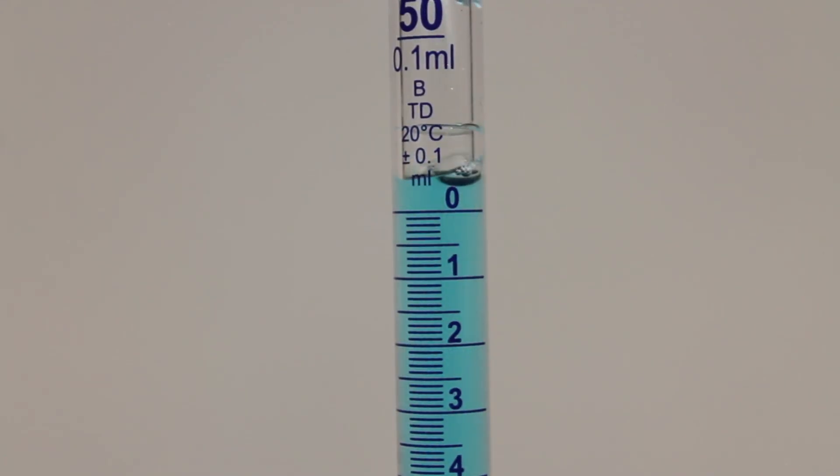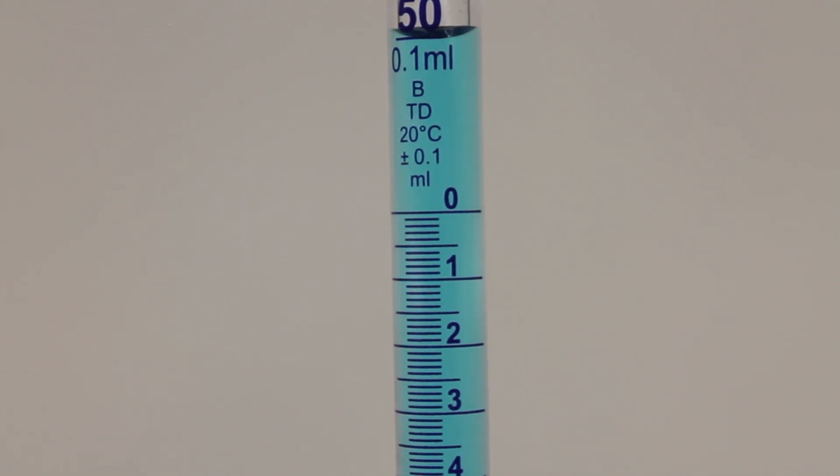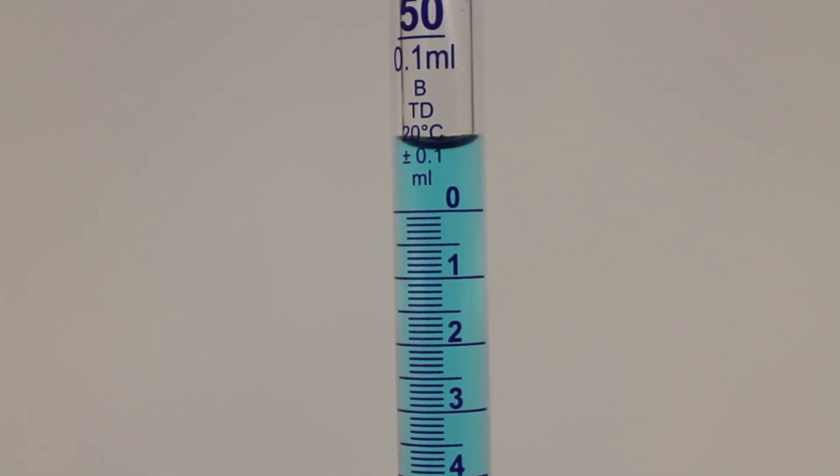Now fill your burette to your desired initial volume. I like to fill mine up past the zero mark then run the burette down to my initial mark at zero. Once you have recorded the initial volume you are ready to use your burette.